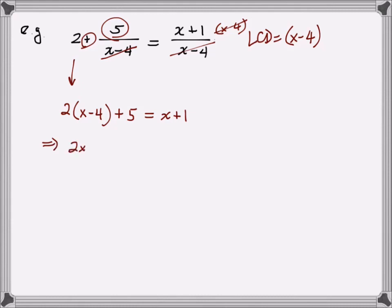This gives me the equation 2x minus 8 plus 5 equals x plus 1. On the left-hand side, I will have 2x minus 3. Let's just move everything to the left here. Subtract x, subtract 1, all set equal to 0. So I have x minus 4 equals 0, so that means x is equal to 4.